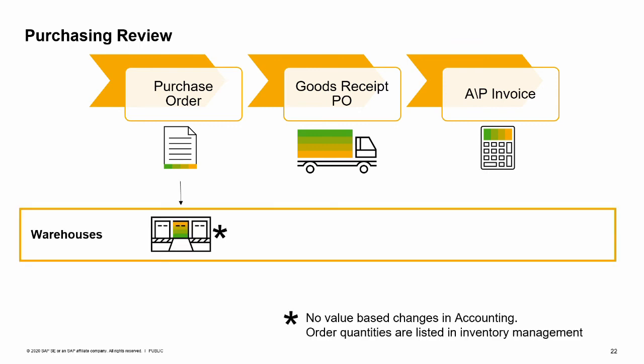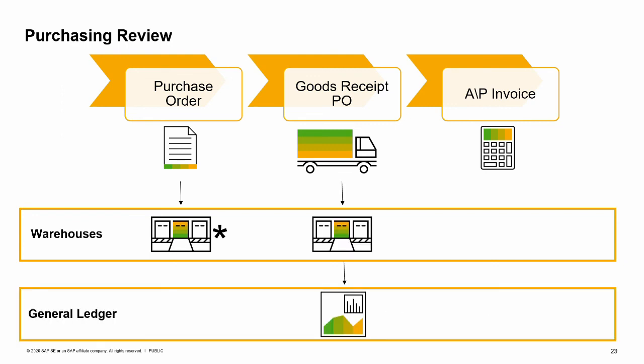Now that we have finished the first three steps in the procurement process for items, we will review what happens when each document is added. Step 1, Purchase order: when you enter a purchase order, no value-based changes are posted in accounting. However, the order quantities are listed in inventory management. You can view the ordered quantities in various reports and windows, such as the inventory status report and the item master data window. Step 2, Goods receipt purchase order: when you enter a goods receipt PO, the goods are accepted into the warehouse and the quantities are updated. If your company runs a perpetual inventory system, SAP Business One creates the relevant postings to update the stock values as well.